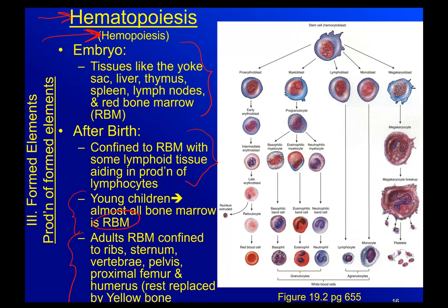As adults, red bone marrow is confined to the ribs, sternum, vertebrae, pelvis, proximal femur, and proximal humerus — the ends closest to the torso at the ball-and-socket joints. Anywhere else that previously had red bone marrow is replaced by yellow bone marrow. Once you're an adult, you're no longer growing, so we know exactly how much energy is needed to run the body at its current size. There's no longer a need for all that extra bone marrow making extra blood cells to support growth.